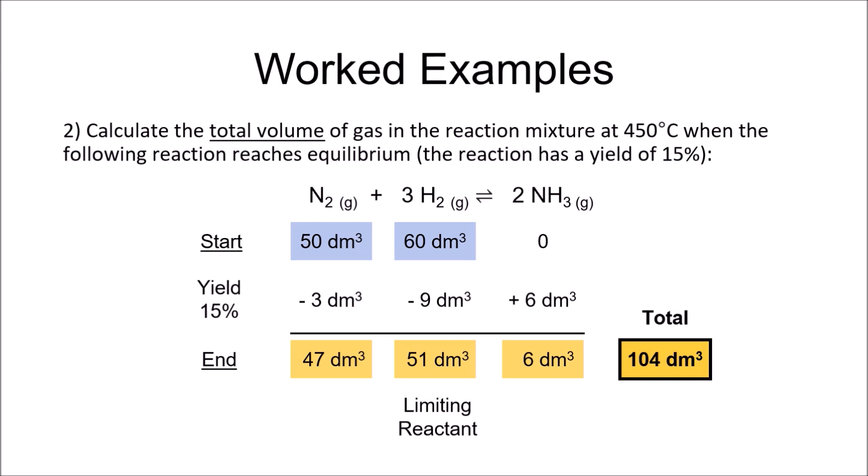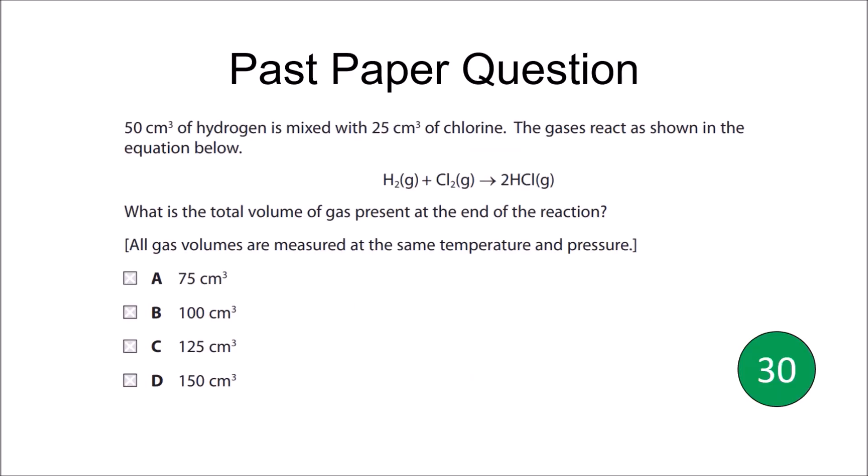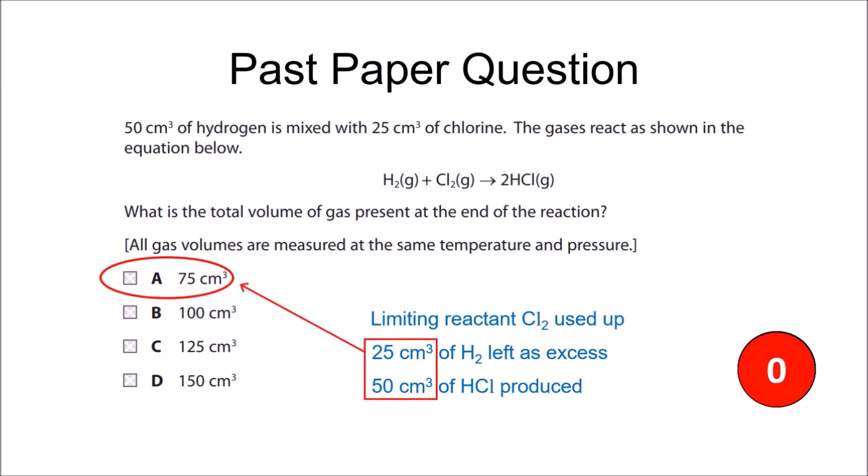Okay, let's have a go at some past paper questions. I'll give you 30 seconds to work out the answer. Okay, so the limiting reactant chlorine is used up. 25 cubic centimetres of hydrogen is used up. 50 cubic centimetres of hydrogen are left as excess, and 50 cubic centimetres of hydrogen chloride are produced. Add these up, and the answer is A.